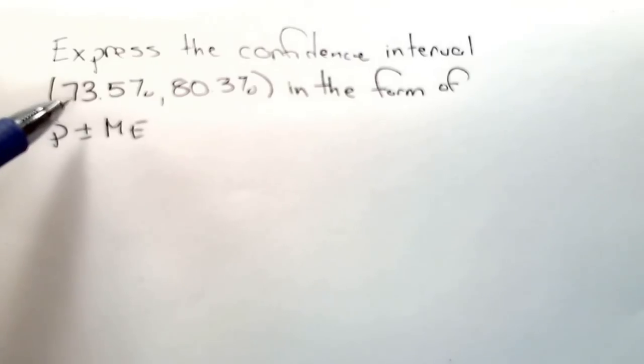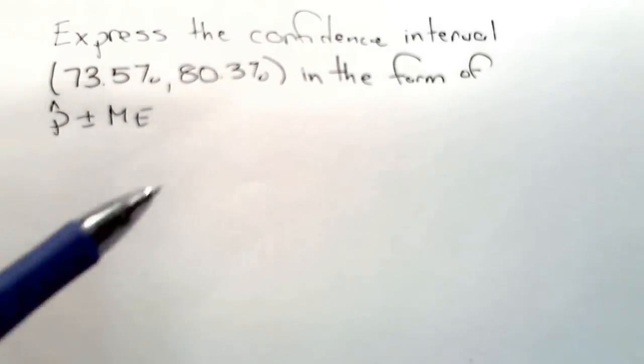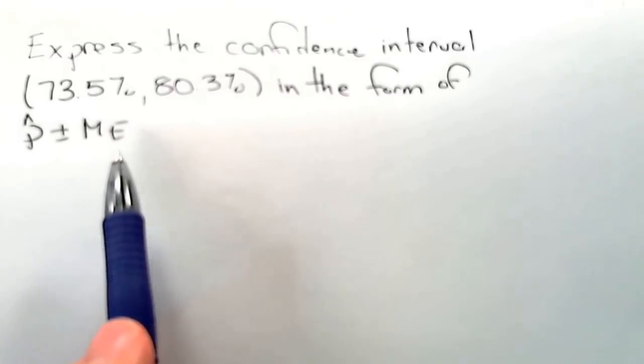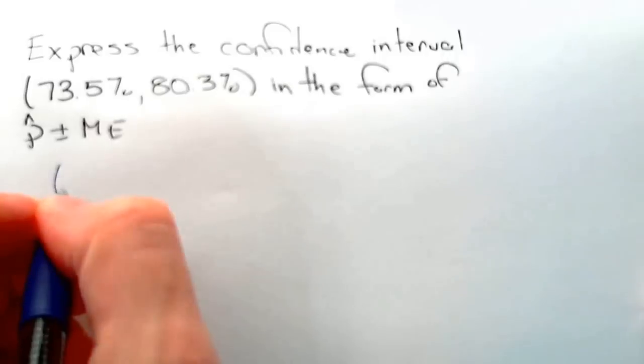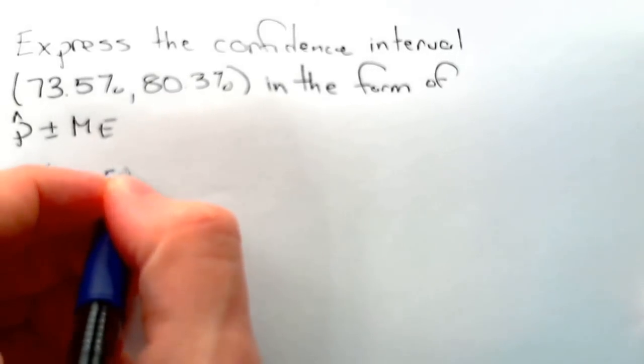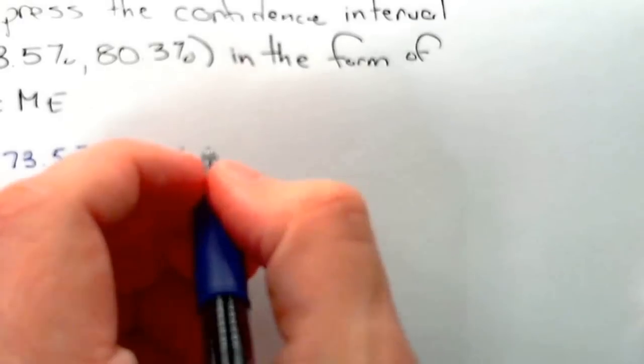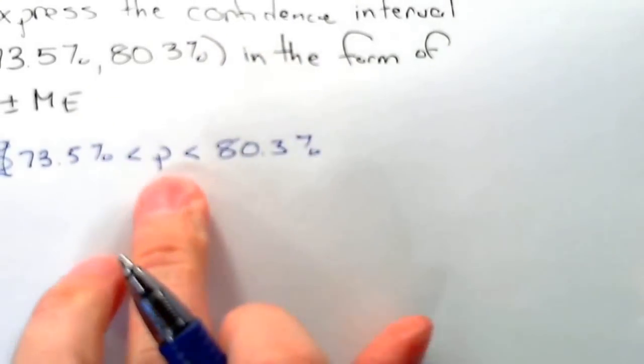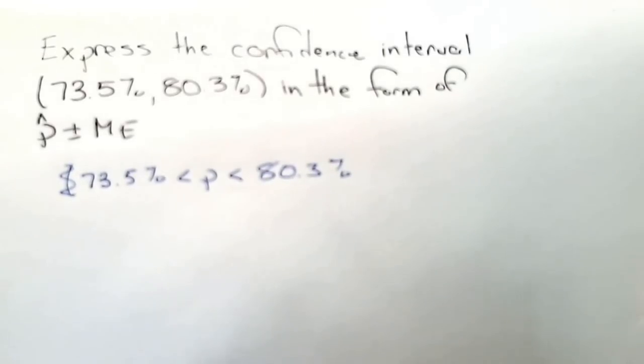Express the confidence interval 73.5% to 80.3% in the form of p hat plus or minus the margin of error. This is the same thing as saying that 73.5% is less than p and less than 80.3%. In other words, the population proportion is between these two numbers for this confidence interval.